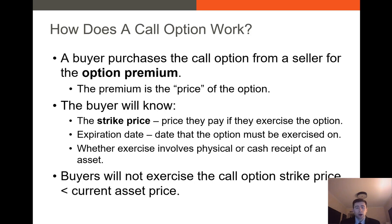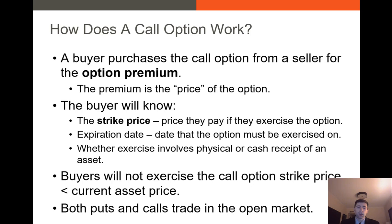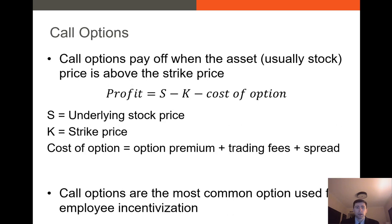If you own a call option — you're the long holder — you would never want to exercise that call option if the strike price is less than the current asset price. These puts and calls do trade in the open market. Our profit function is essentially our underlying stock price minus the strike price K — just like in baseball — and then we subtract the cost of the option, mostly the premium itself. So profit equals S minus K minus premium.